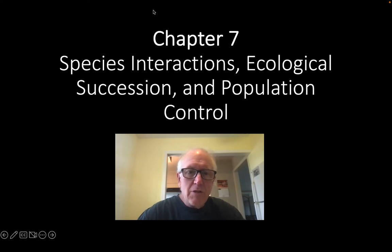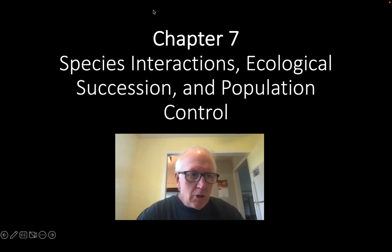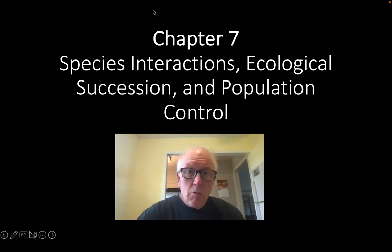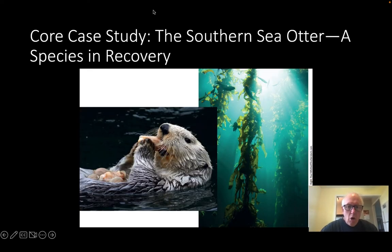So we're talking about species interactions, ecological succession, and population control. We'll largely be talking about what would ideally be going on in nature, and also about how we've interrupted these interactions and progressions. We'll start off talking about a predator species here.